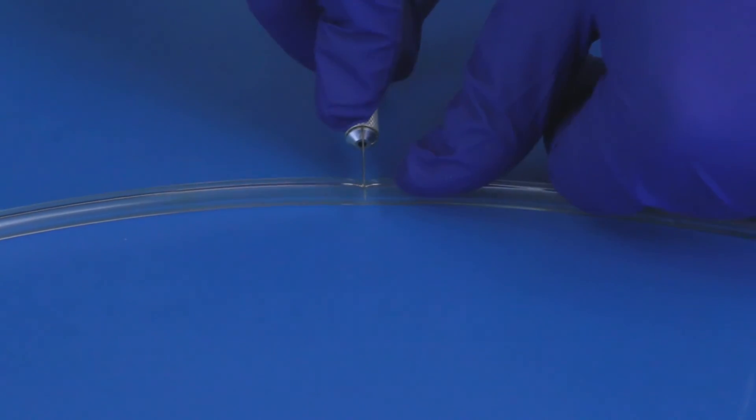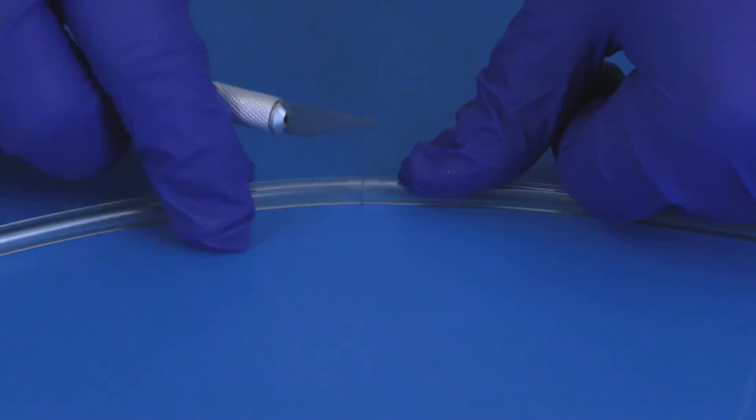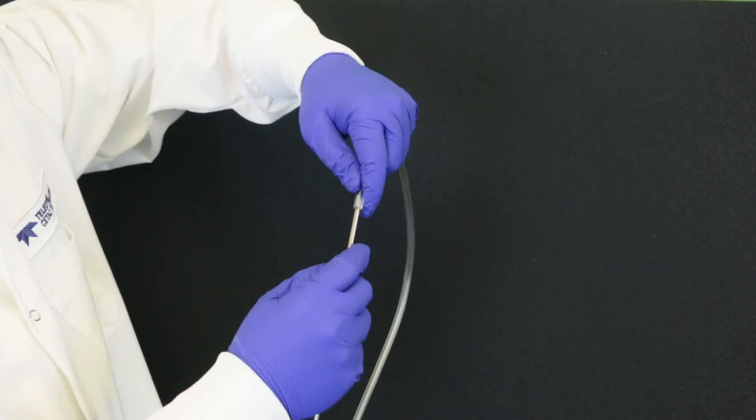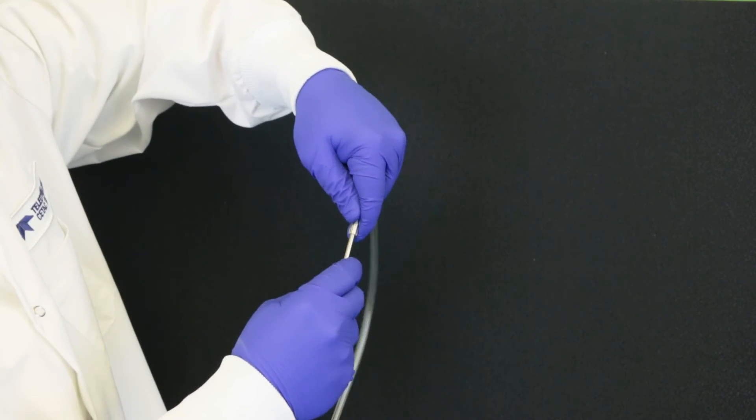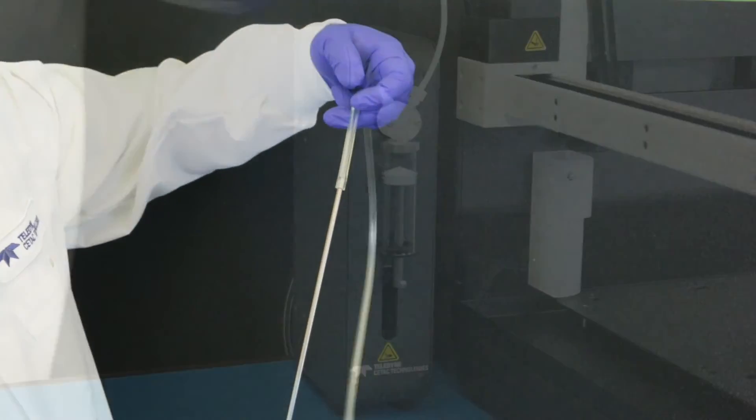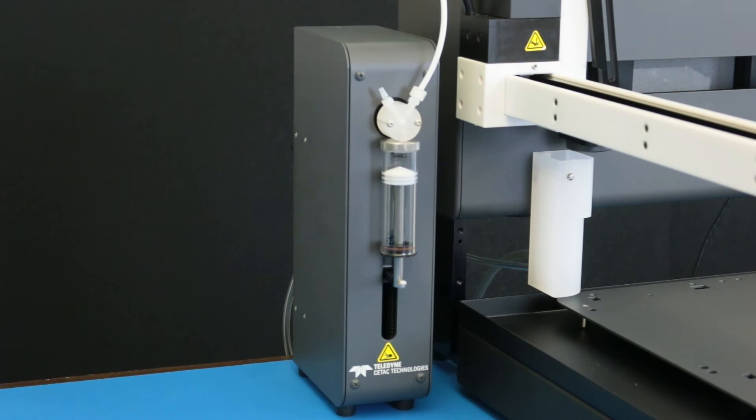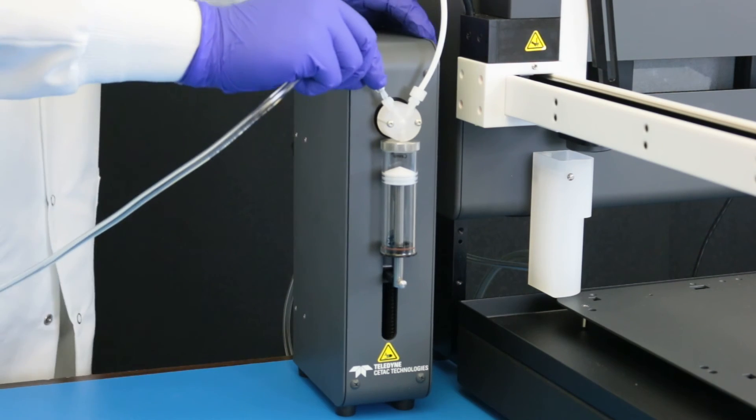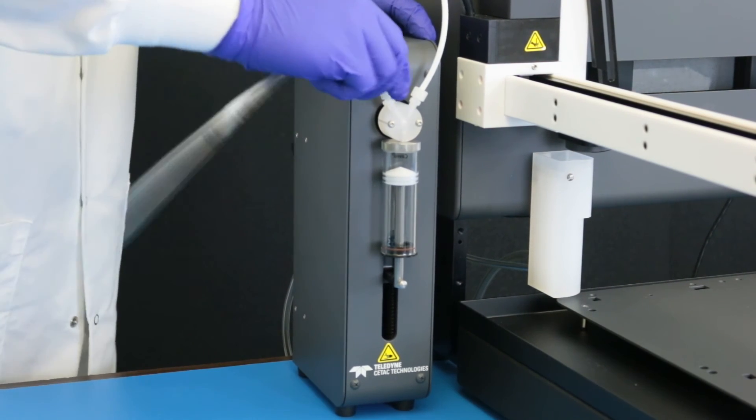Cut a length of 1/8 inch ID tubing long enough to reach the top of the bottle of diluent. Insert the remaining stainless steel rinse diluent tube into one end of this tubing. Press the free end of the tubing onto the fitting on the left side of the syringe pump valve.